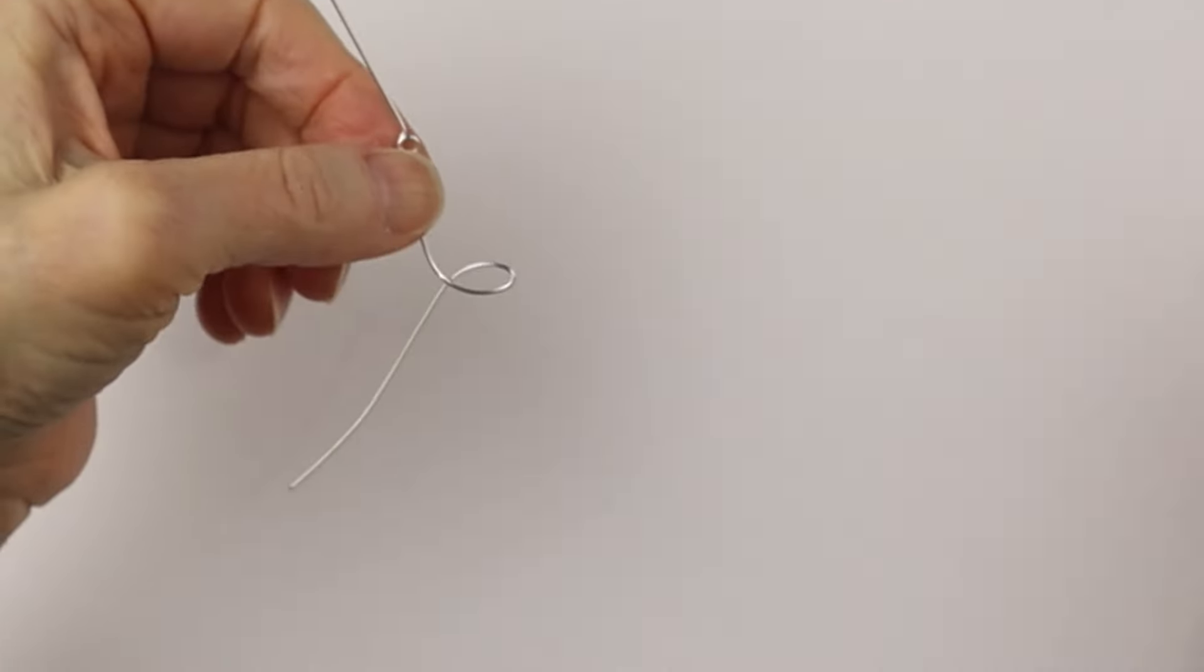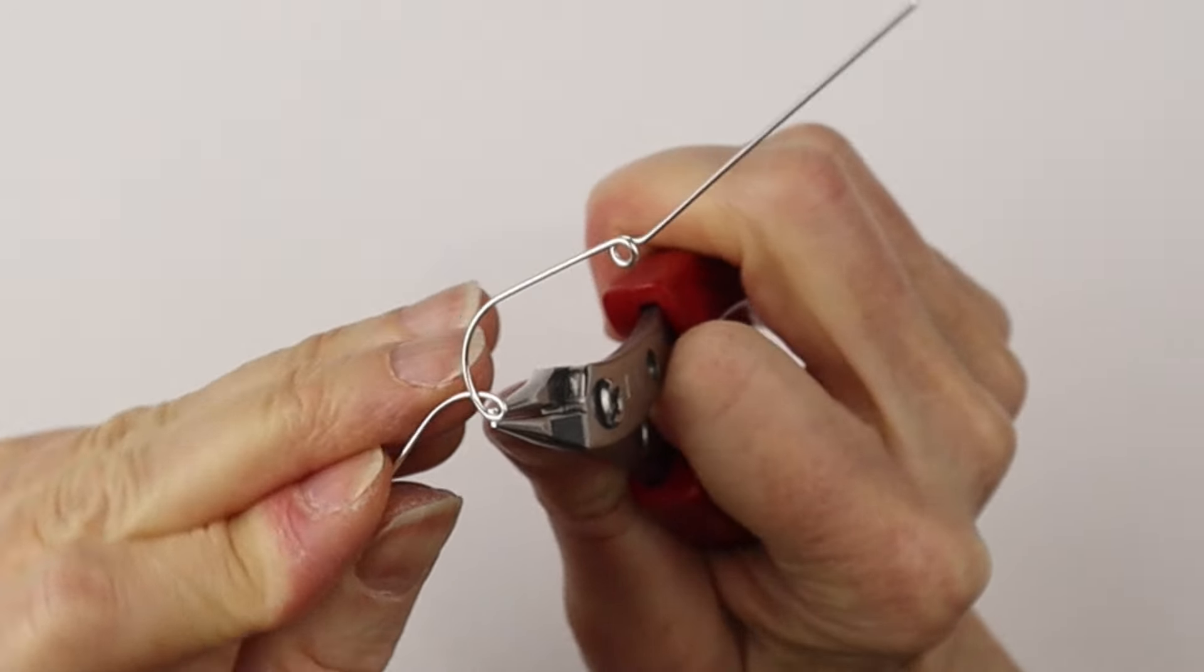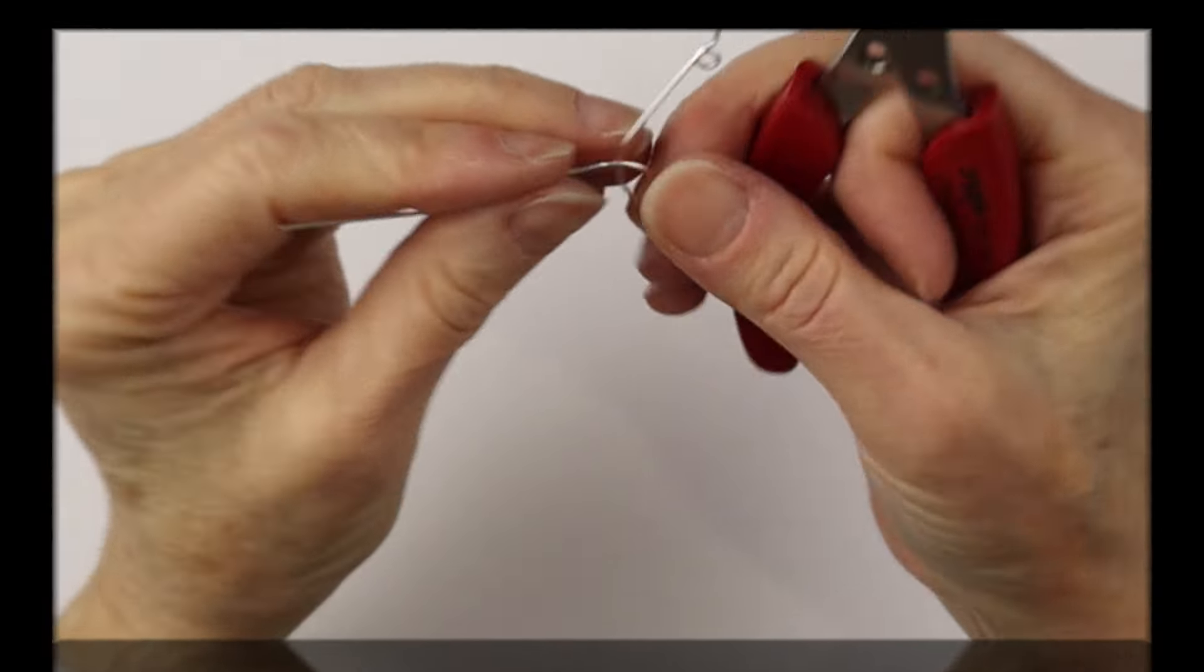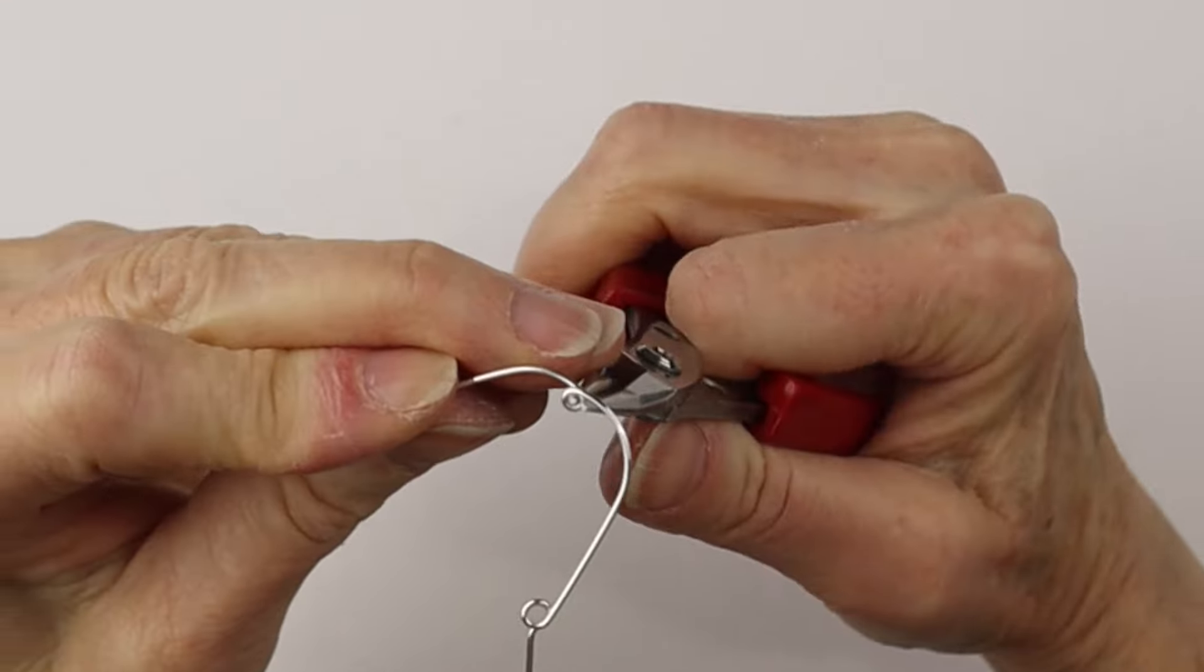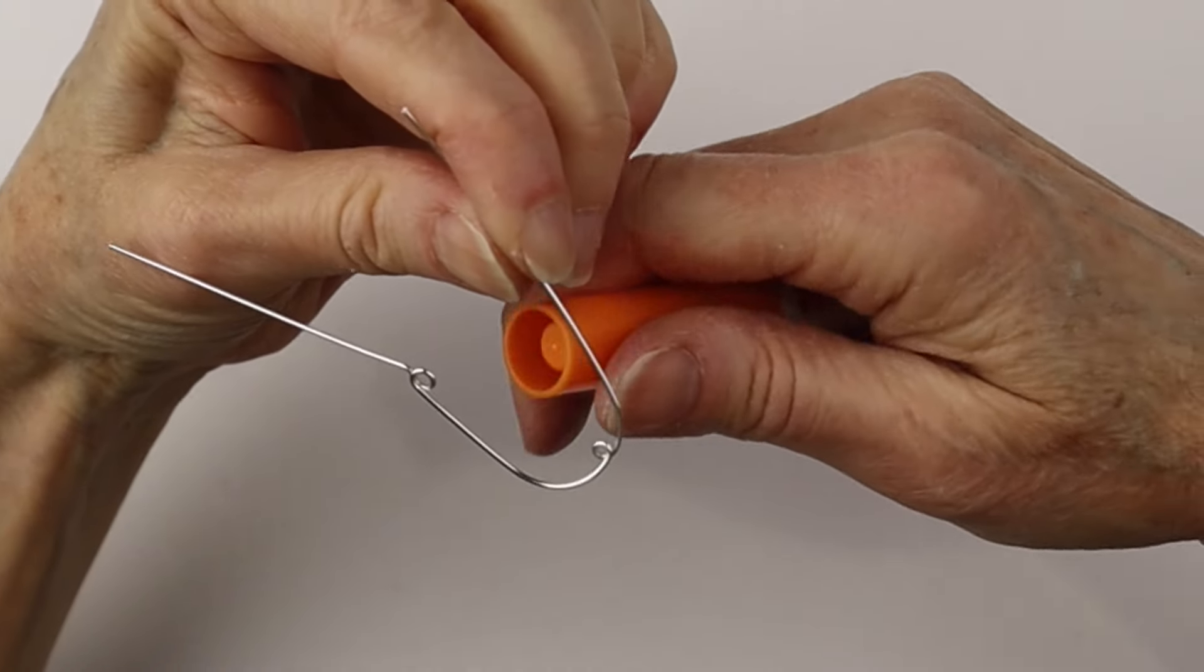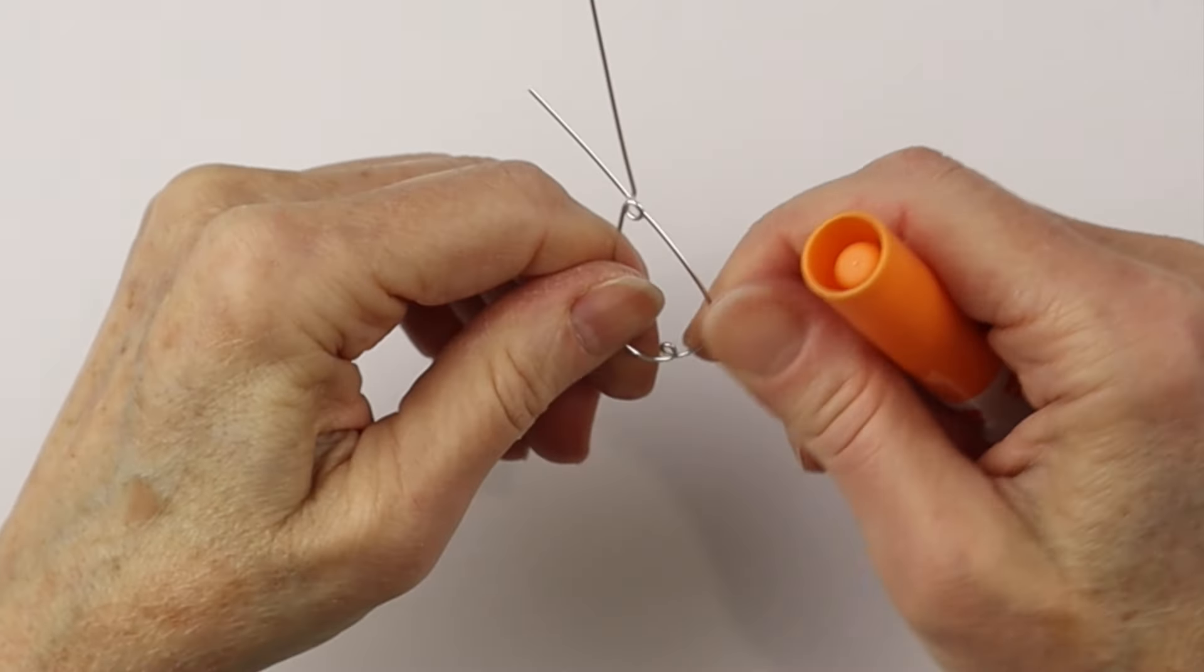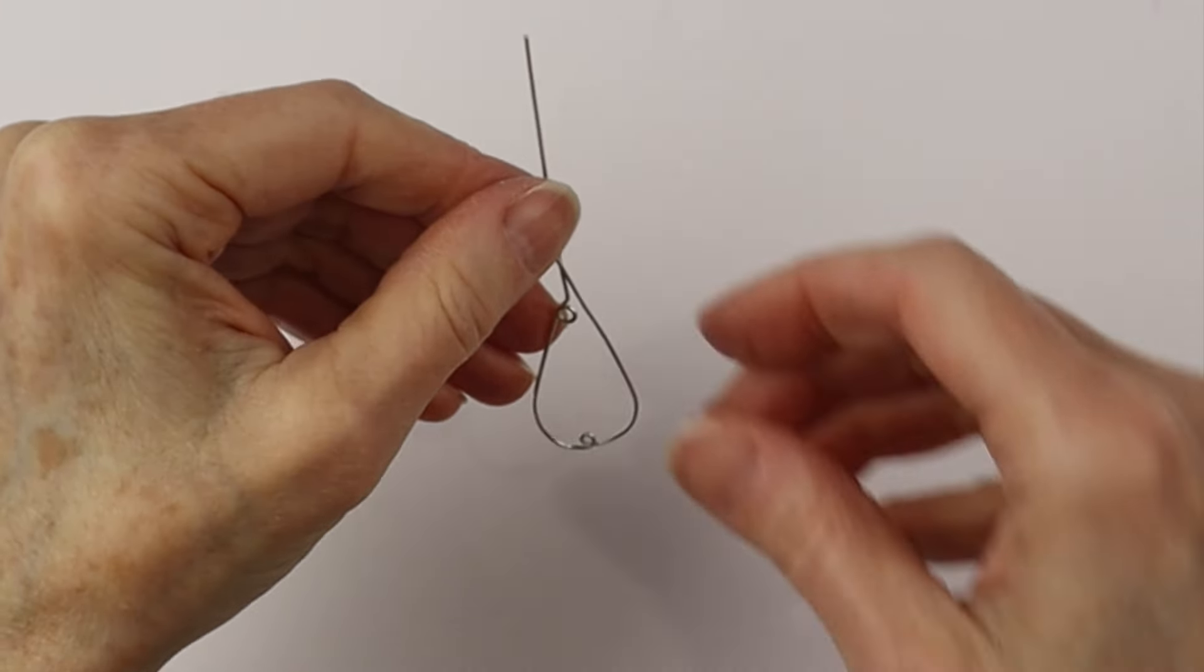That's where the bottom loop is going to be. Now separate them and create that little loop. I want it quite small so I'm using my smaller round nose pliers. I'll link up all my tools in the description below. Now we're going to continue the teardrop using just the edge of the marker to finish the teardrop shape.